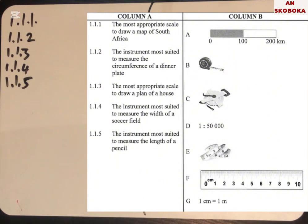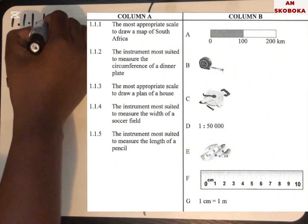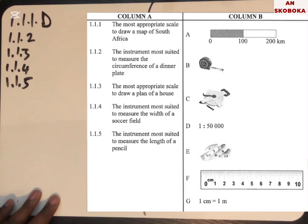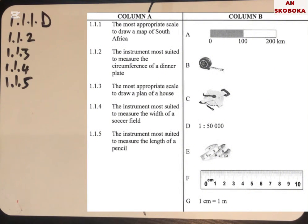The first description is the most appropriate scale to draw a map of South Africa. The answer is D, which is 1:50,000. This is the most appropriate scale to draw a map of South Africa — 1:50,000 — meaning one unit on the map represents fifty thousand units in real life.